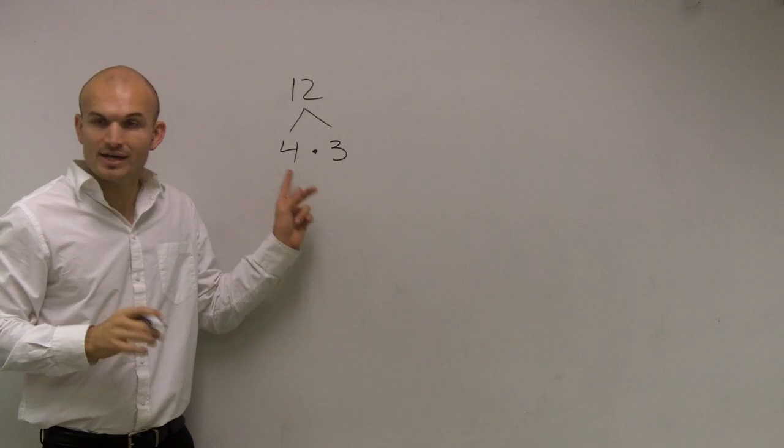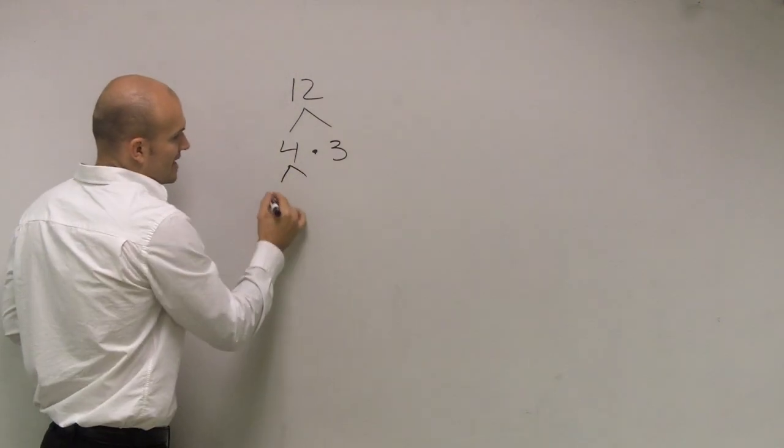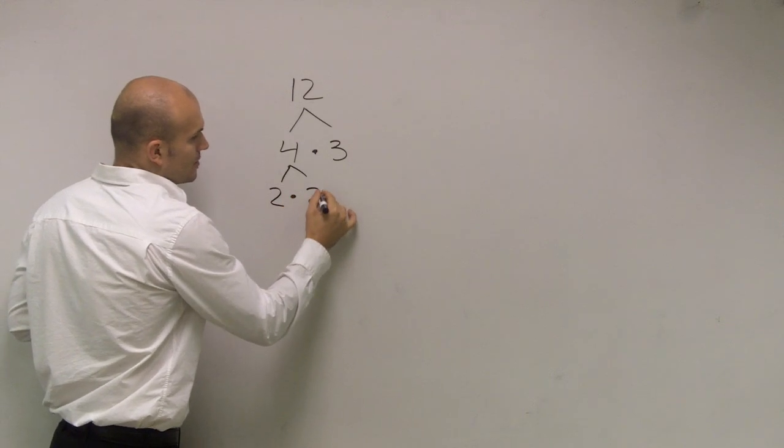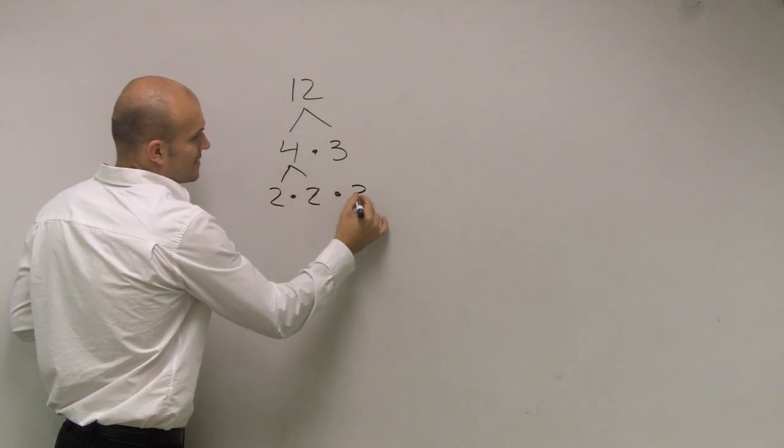Again, 4 is not a prime number as well, so I can break that down again into 2 times 2, and then we can just bring down that times 3.